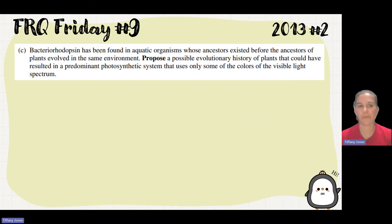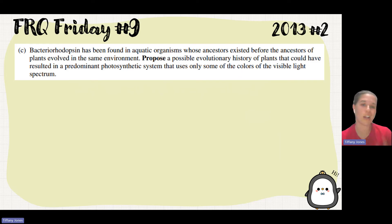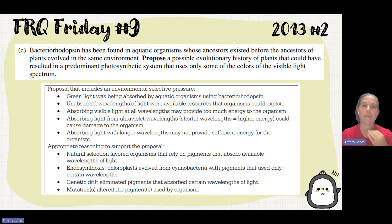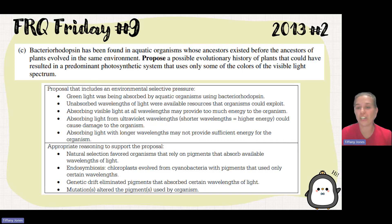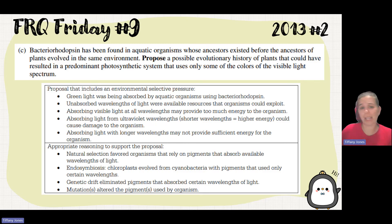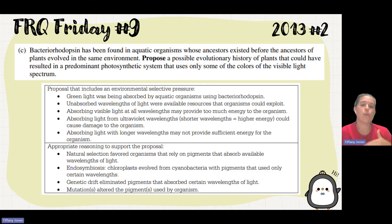The third part goes back to evolution. Bacteriorhodopsin has been found in aquatic organisms whose ancestors existed before plants evolved in that same environment. We need to come up with an evolutionary history explaining why plants use only some wavelengths of visible light — not green. Options include: green light was already being absorbed by bacteriorhodopsin so it wasn't available; unabsorbed wavelengths were available to exploit; absorbing all visible light provided too much energy; absorbing ultraviolet would damage the organism and cause mutations; and natural selection favored organisms with pigments that absorbed available light, allowing them to survive and pass those traits to offspring.